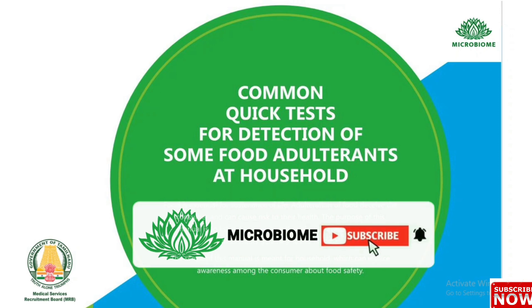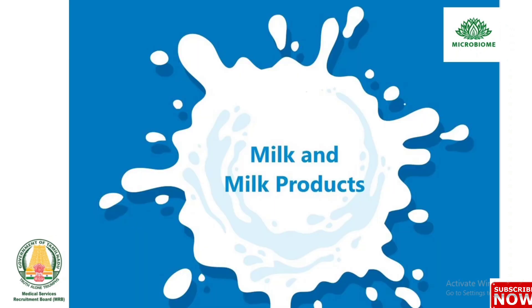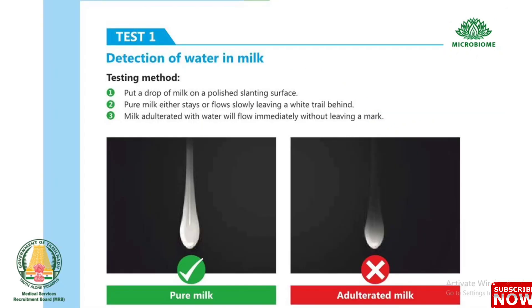Here are common quick tests for detection of food adulterants at household level. First, about milk and milk products. Test 1: Detection of water in milk. Place milk on a polished slanting surface. Pure milk flows slowly, leaving a white trail behind. Milk adulterated with water will flow immediately without leaving a mark.